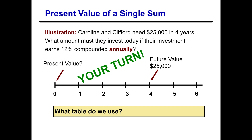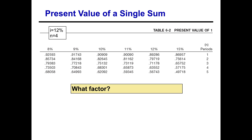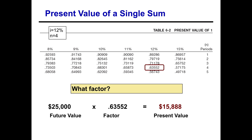This is a present value question and a lump sum question because we have a one-time payment of $25,000. If you look at the present value of a lump sum table, find the twelve percent column and go down to row four for four periods, you find the factor to be 0.63552. Multiply that times the future value amount of $25,000 and you find that you need to invest $15,888 today to have $25,000 in four years.